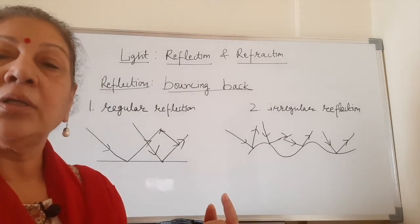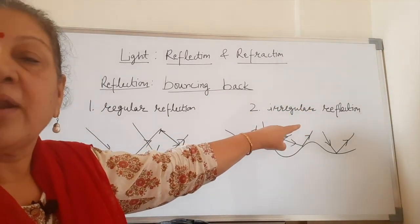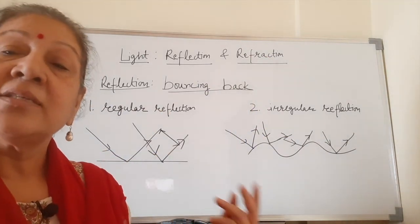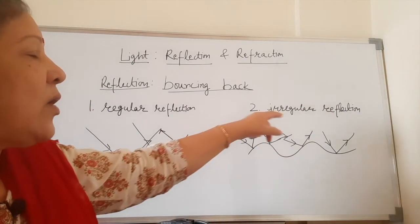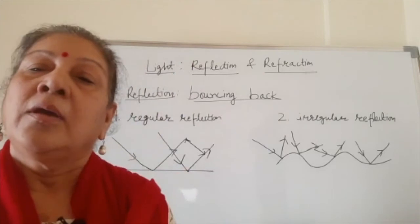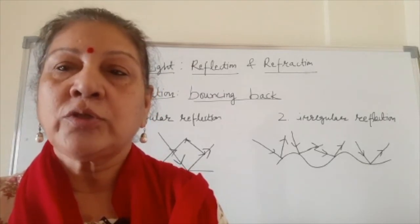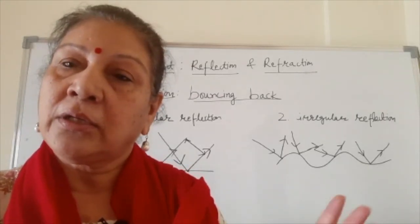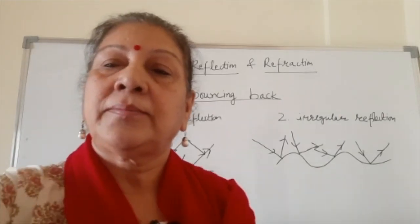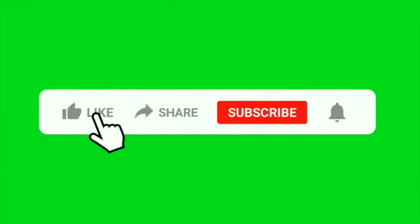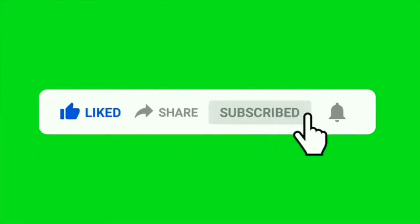Light from the sun comes to earth because of this scattering of light, or through irregular reflection, because along the way there are different kinds of surfaces — some rough, some smooth. So that's how light from the sun comes to us. My explanation of the whole topic will be followed by two slides which will take care of all the notes, so you don't have to look for the book. I'll see you next time.